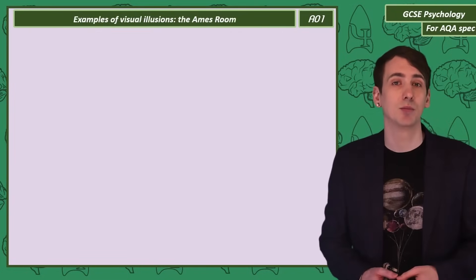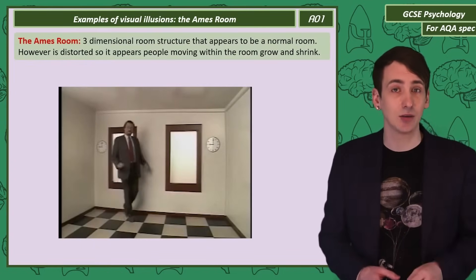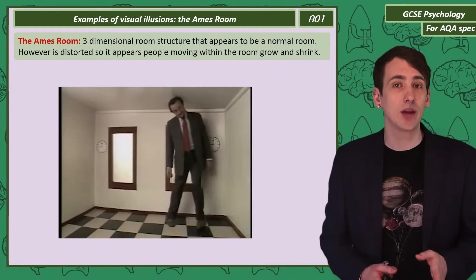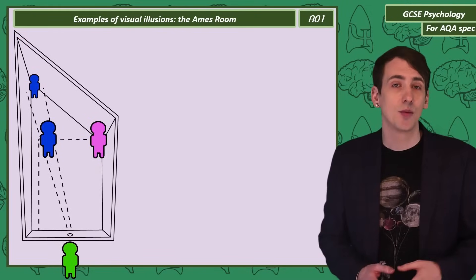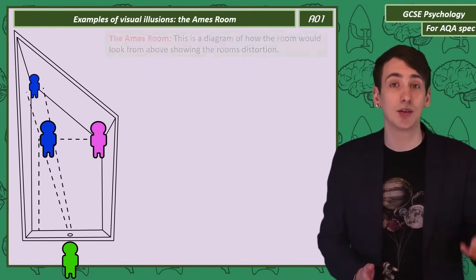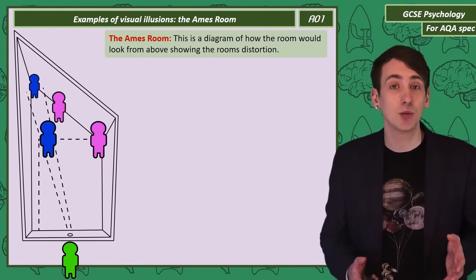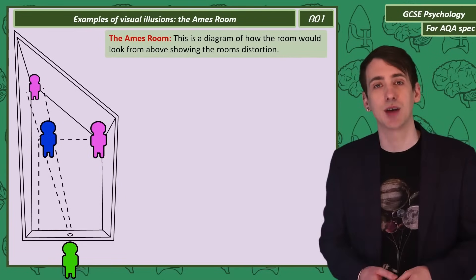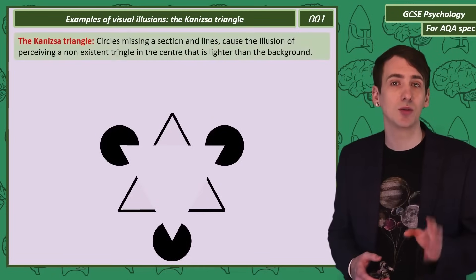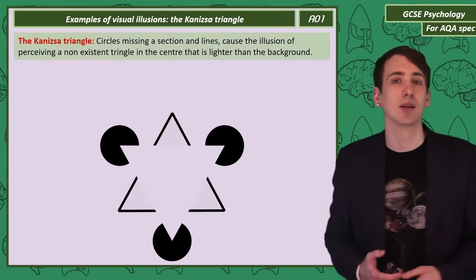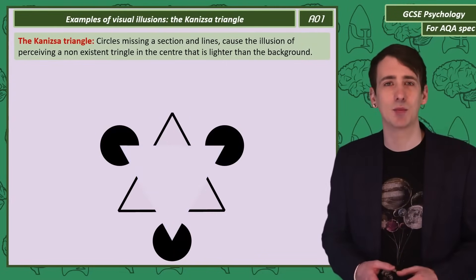Now we have the Ames Room. This is a three-dimensional structure built so that from just one perspective it looks like a normal room. However, people within it appear to be growing larger or smaller as they move around. The reason is all the angles within the room are distorted — it only looks normal from that one perspective. The mind assumes the room is normal and the person must be changing in size. We also have the Kanizsa Triangle: a set of shapes — three circles missing sections and three arrow-shaped lines — producing the illusion of a triangle in the center that is a little lighter than the background.